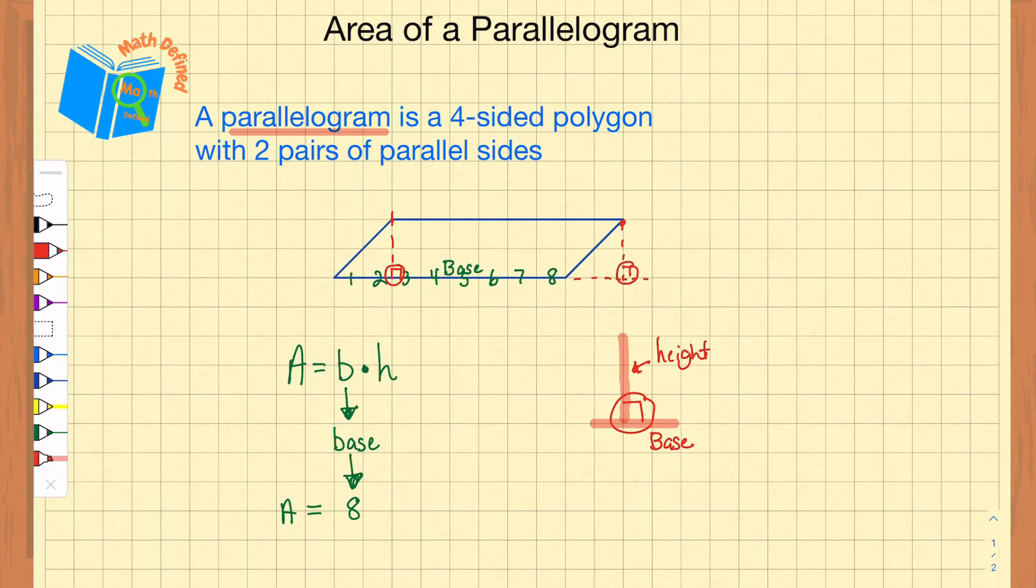The dotted or the dashed lines means that that is not part of the shape. That's why you don't draw a solid line. You just draw a dashed line because it helps you find the information that you need to fill in the formula.